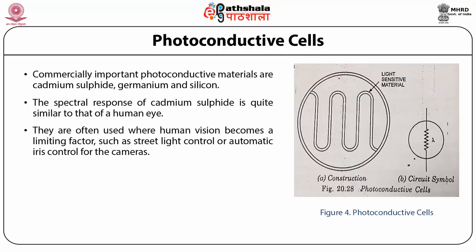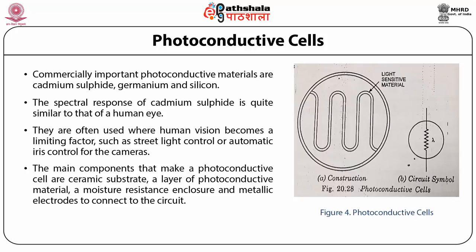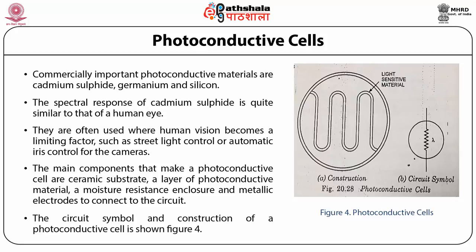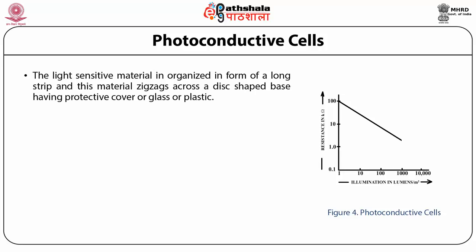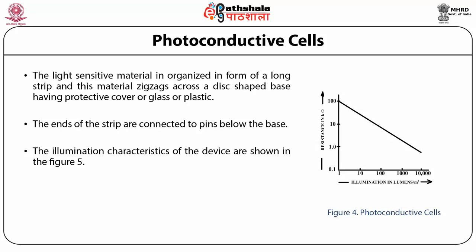The main components of a photoconductive cell are a ceramic substrate, a layer of photoconductive material, a moisture-resistant enclosure, and metallic electrodes to connect to the circuit. The light sensitive material is organized in the form of a long strip, which zigzags across a disc-shaped base having a protective cover of glass or plastic. The ends of the strip are connected to pins below the base. The illumination characteristics of the device are shown in figure 5.